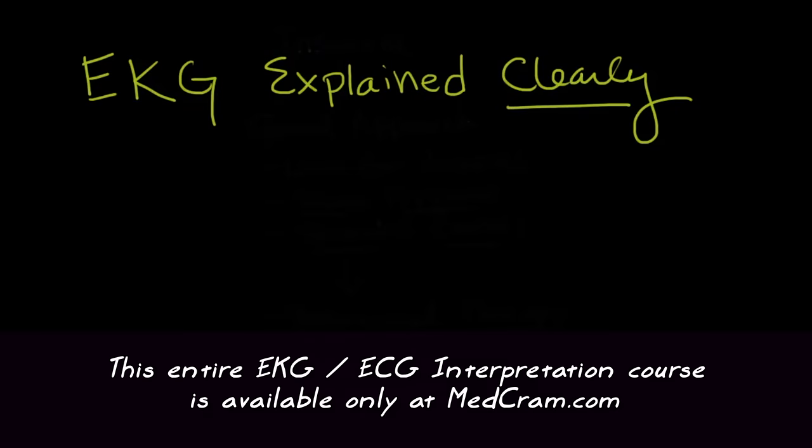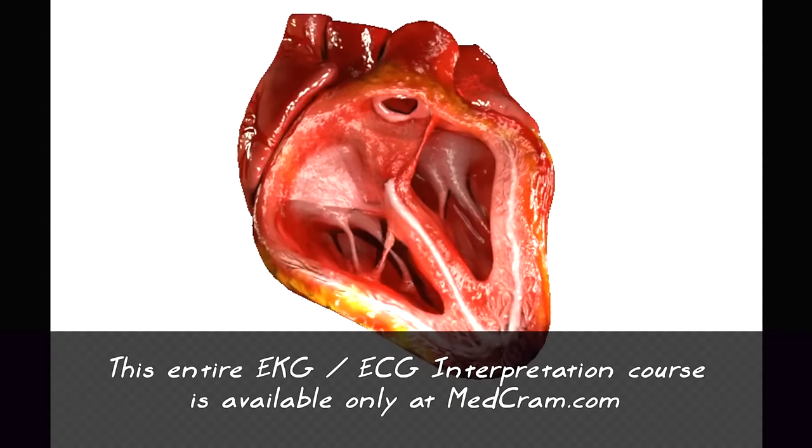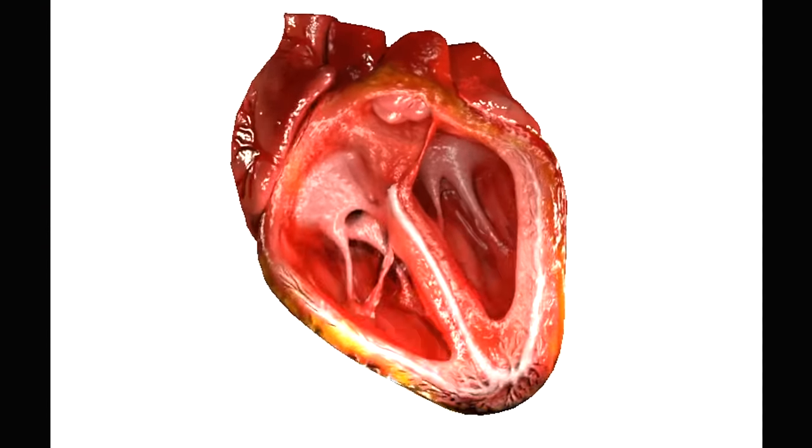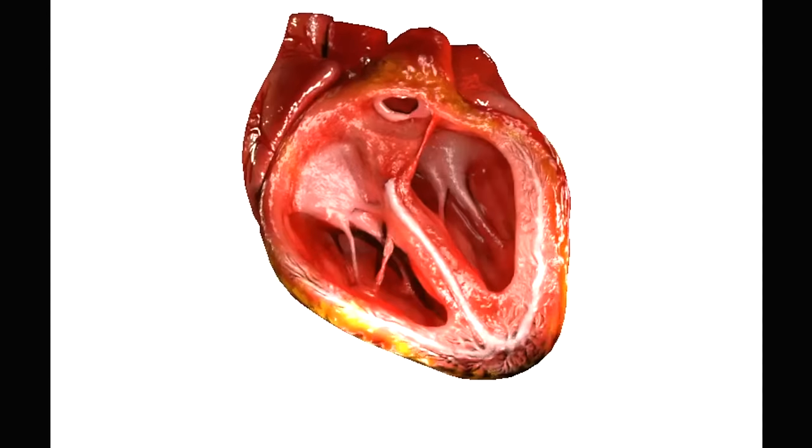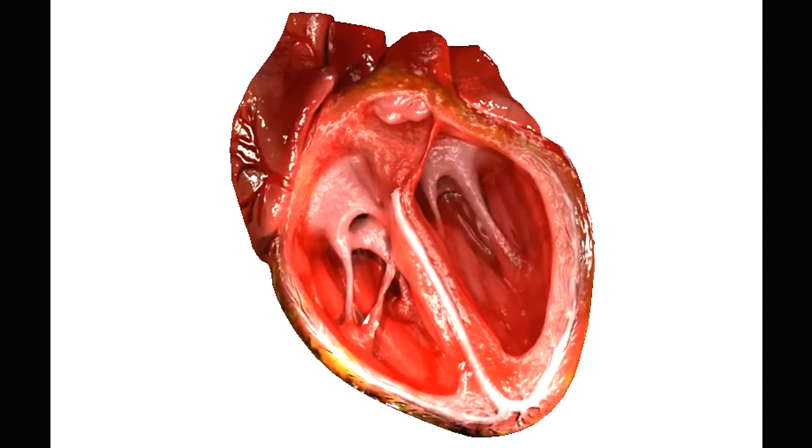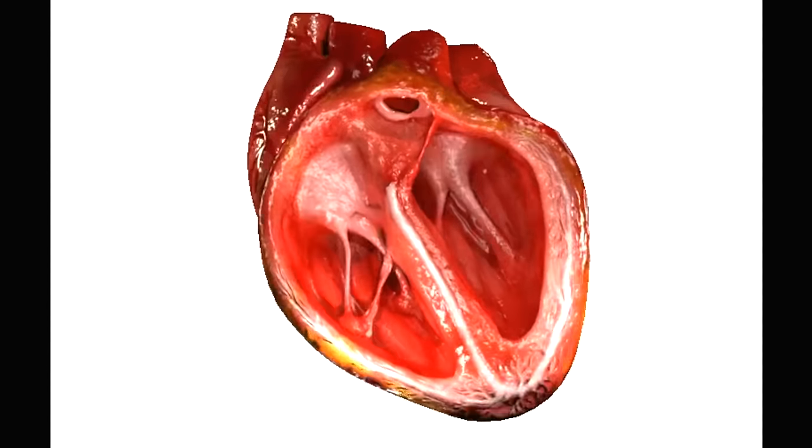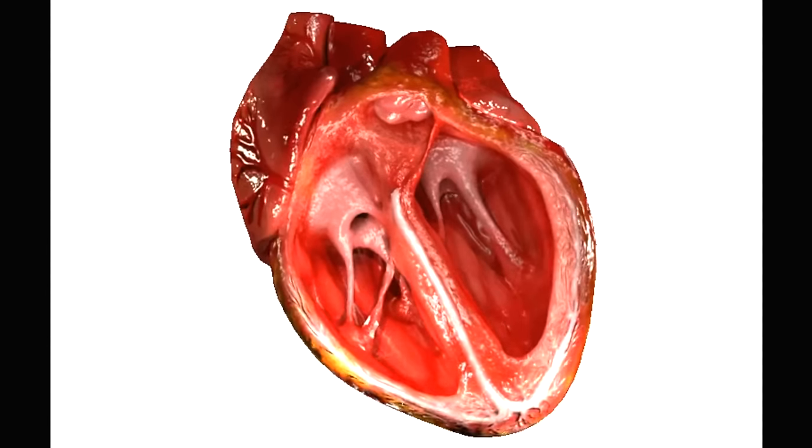So let's begin with anatomy. This is an animation here of the heart beating and there's a number of things that I want you to see so you'll understand this when we talk about the conduction system of the heart and the EKG. The EKG is a way of looking at the electrical activity of the heart, and it's really the electrical activity of the heart that is responsible for what we're seeing here right now.